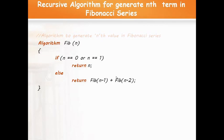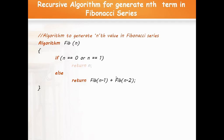The algorithm generates the nth value in the Fibonacci series, where n is the term number. If n equals 0 or n equals 1, return the corresponding n, since Fibonacci of 0 is 0 and Fibonacci of 1 is 1. Otherwise, return Fibonacci of n minus 1 plus Fibonacci of n minus 2. For example, Fibonacci of 2 equals Fibonacci of 1 plus Fibonacci of 0, which equals 1 plus 0, giving 1. This way the nth Fibonacci term can be calculated recursively.